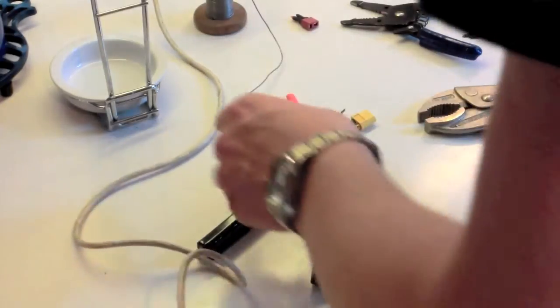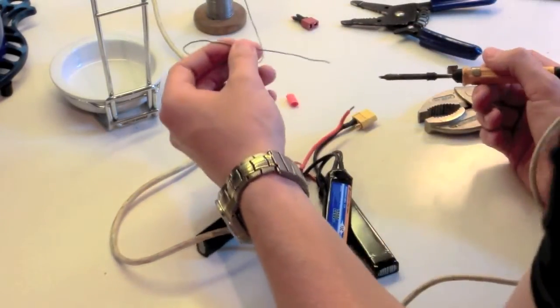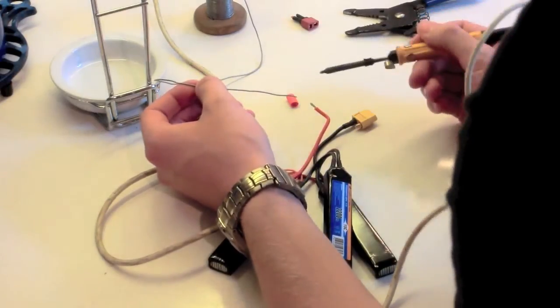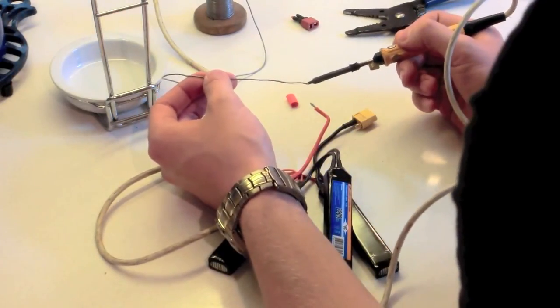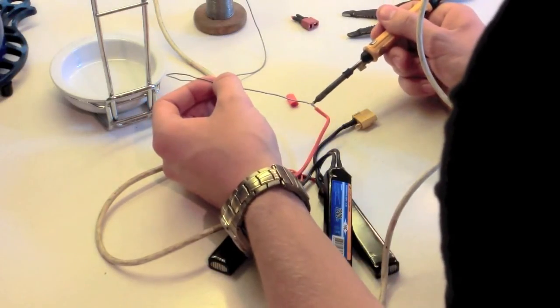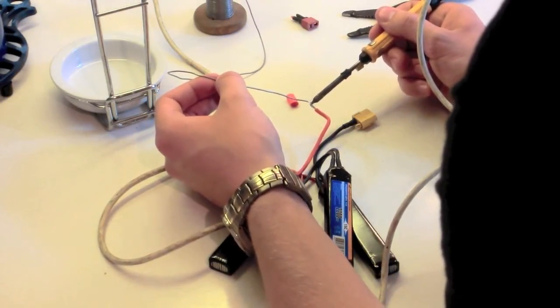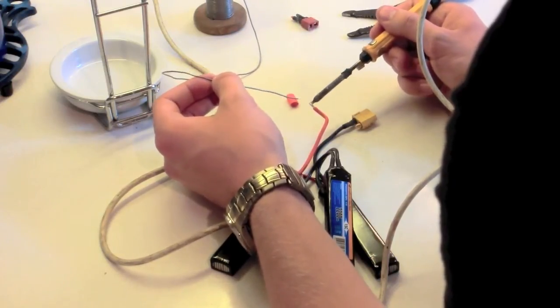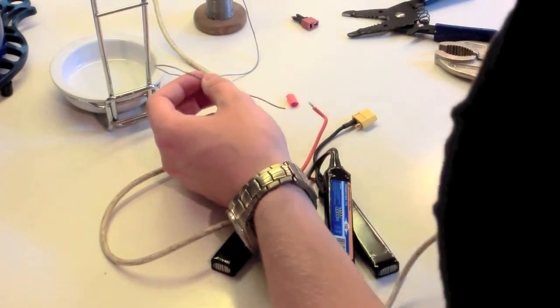Time to tin this bit of wire. Get our soldering iron. And we just tin the end of the soldering iron. Oh, there we go. That's nice.